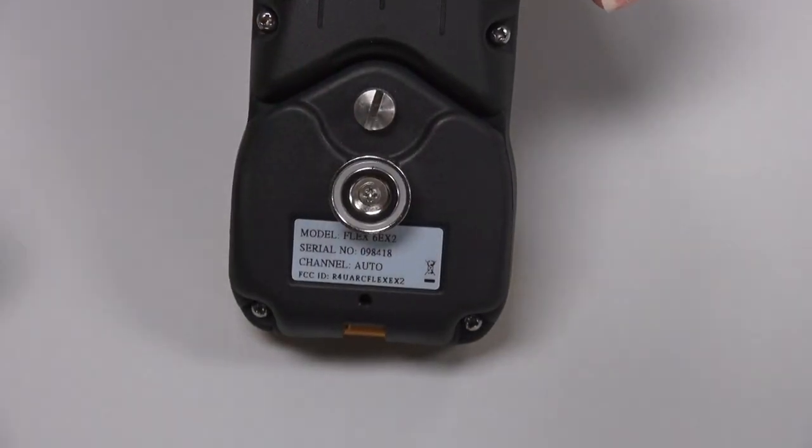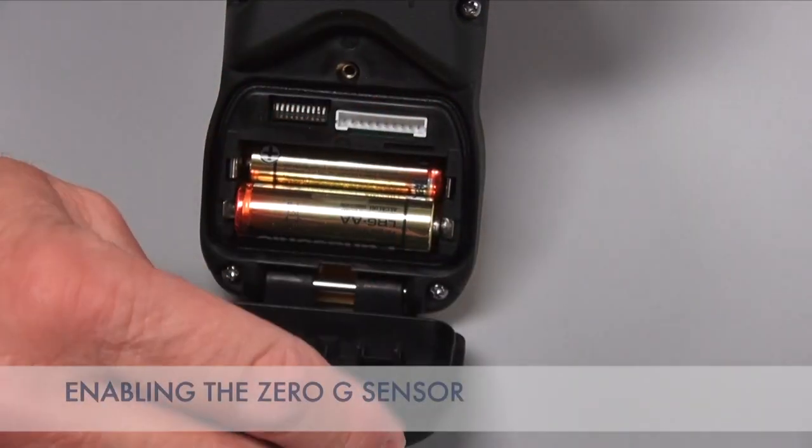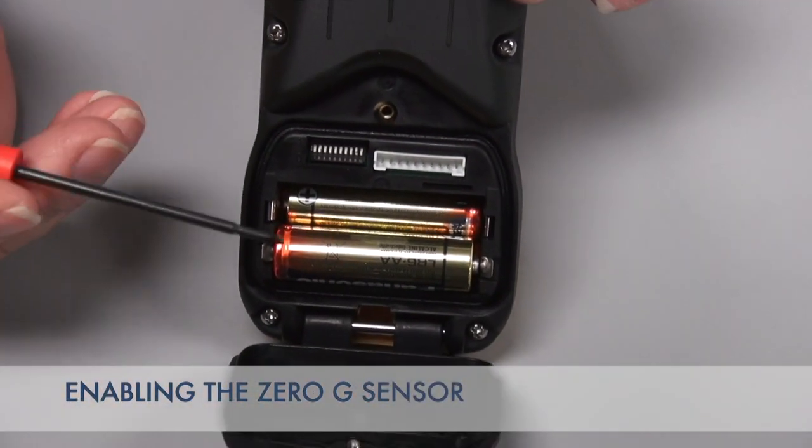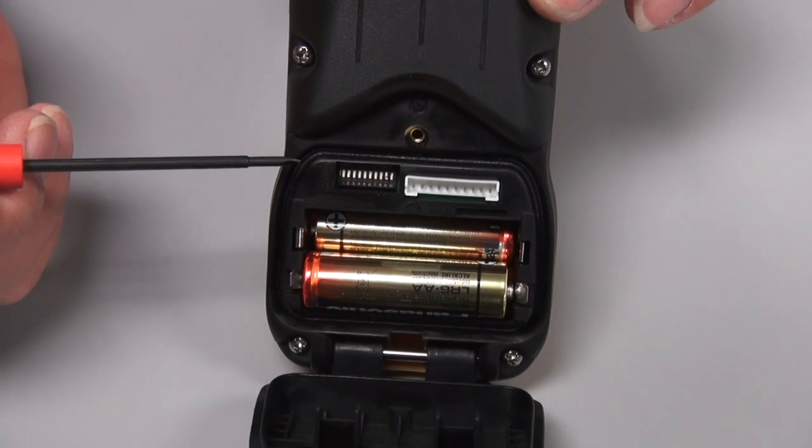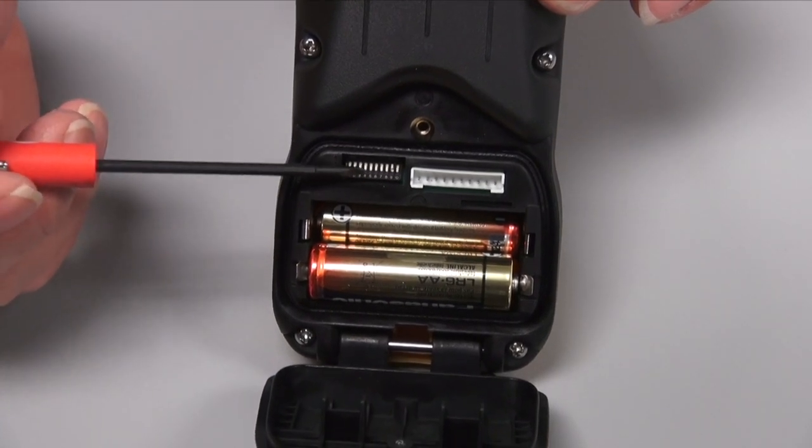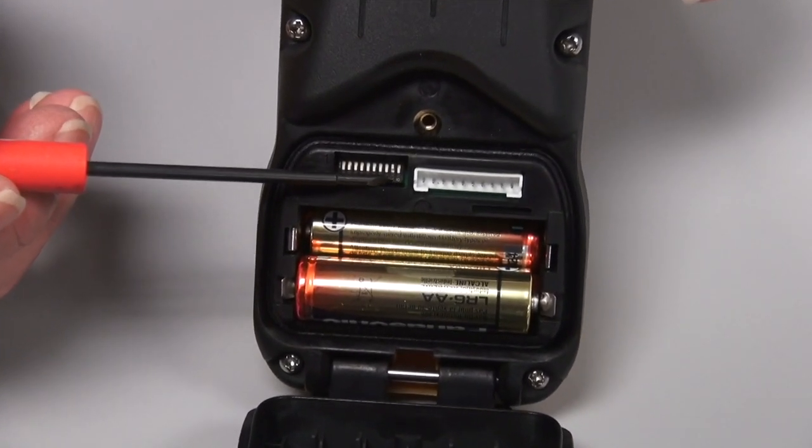To enable the 0G sensor, start by undoing the single thumb screw on the battery cover, locate switch number 9. This switch must be turned to the on or up position.